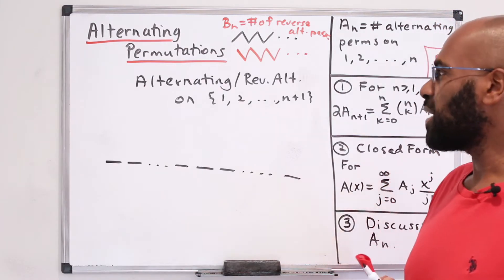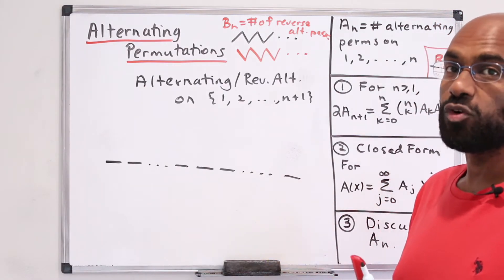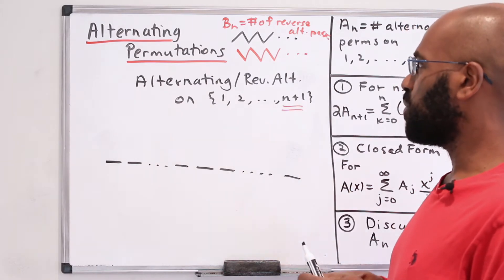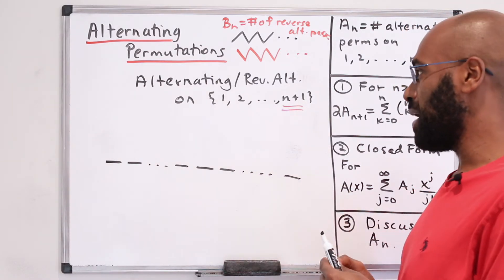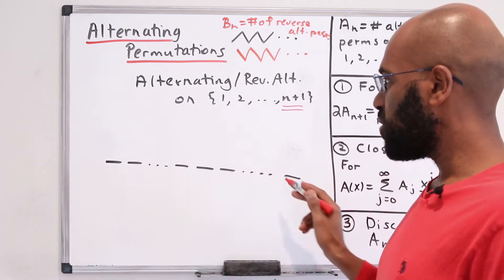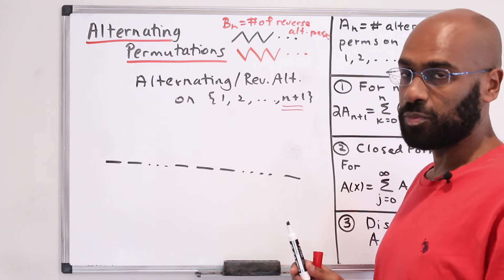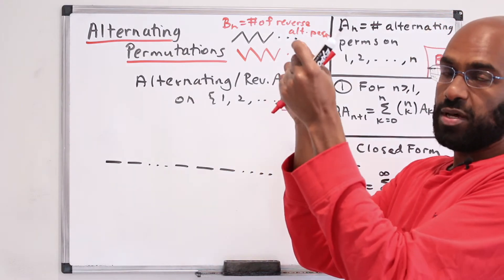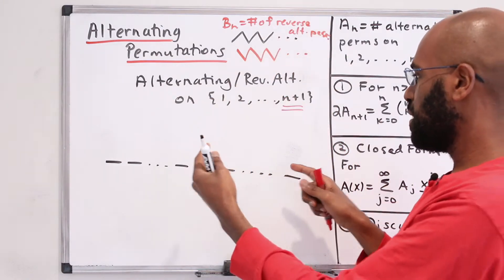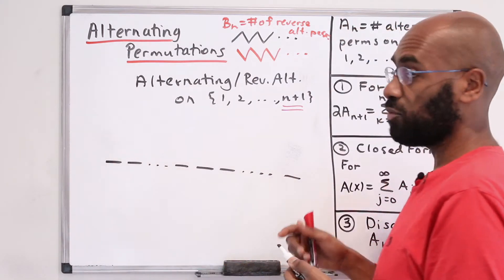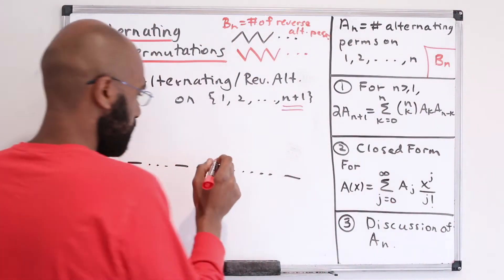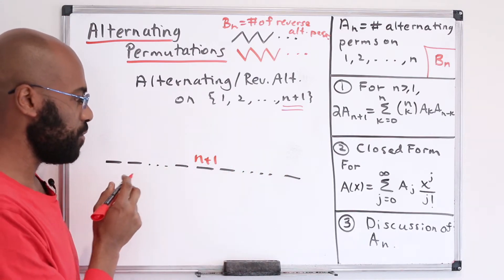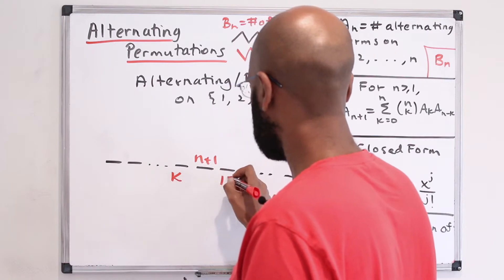Let's imagine we clump together all alternating permutations and all reverse alternating permutations. Then we take permutations of these types on the set 1 through n plus 1. This largest element is going to lie somewhere, and all possible positions are possible because we're either alternating or reverse alternating. So wherever this n plus 1 is, we're going to have a less-than before it or a greater-than before it, giving us either one of the types. If we put n plus 1 in some position k, there are many different positions this n plus 1 can go.